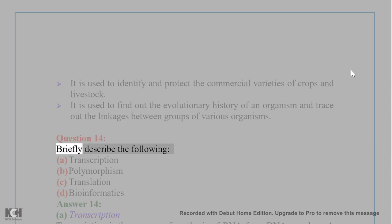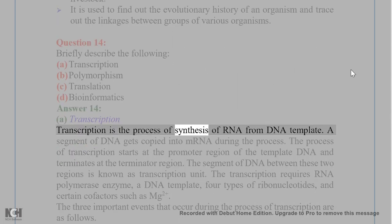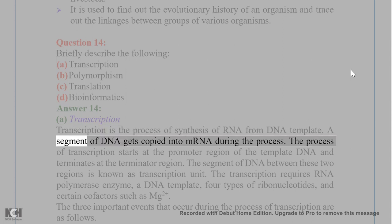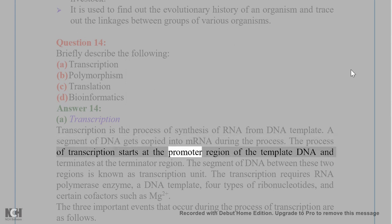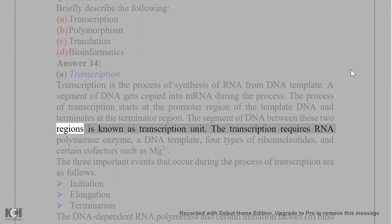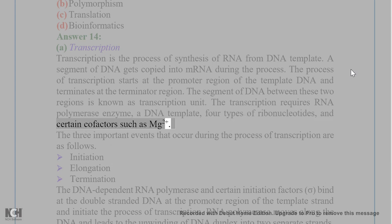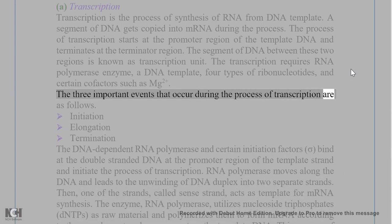Question 14. Briefly describe the following: A. Transcription, B. Polymorphism, C. Translation, D. Bioinformatics. Answer 14. A. Transcription: Transcription is the process of synthesis of RNA from a DNA template. A segment of DNA gets copied into mRNA during the process. It starts at the promoter region and terminates at the terminator region. The segment between these two regions is known as the transcription unit. The process requires RNA polymerase enzyme, a DNA template, four types of ribonucleotides, and cofactors such as Mg2+. The three important events are initiation, elongation, and termination.